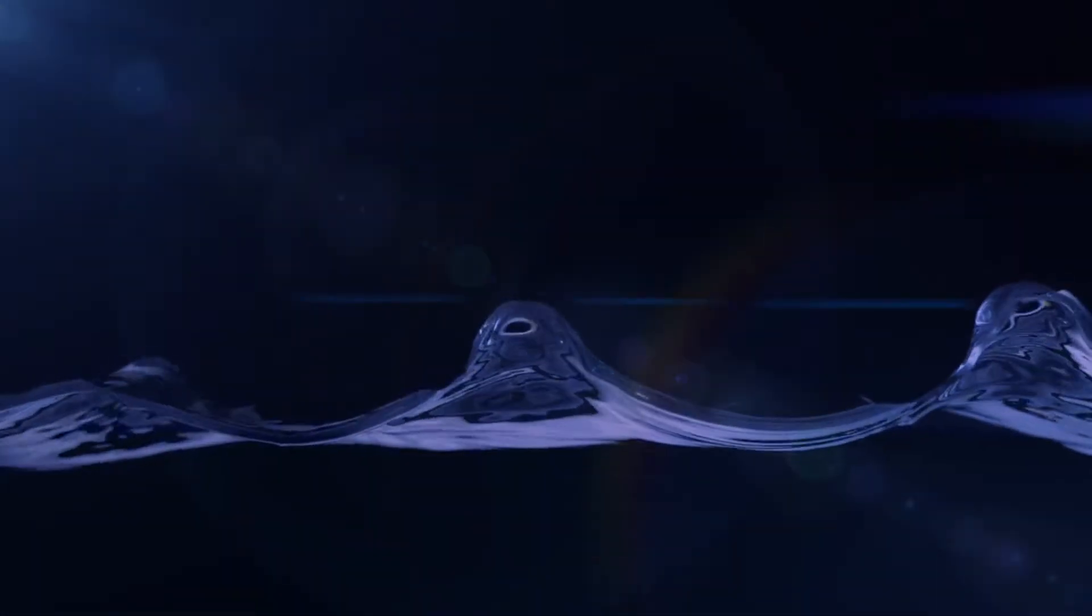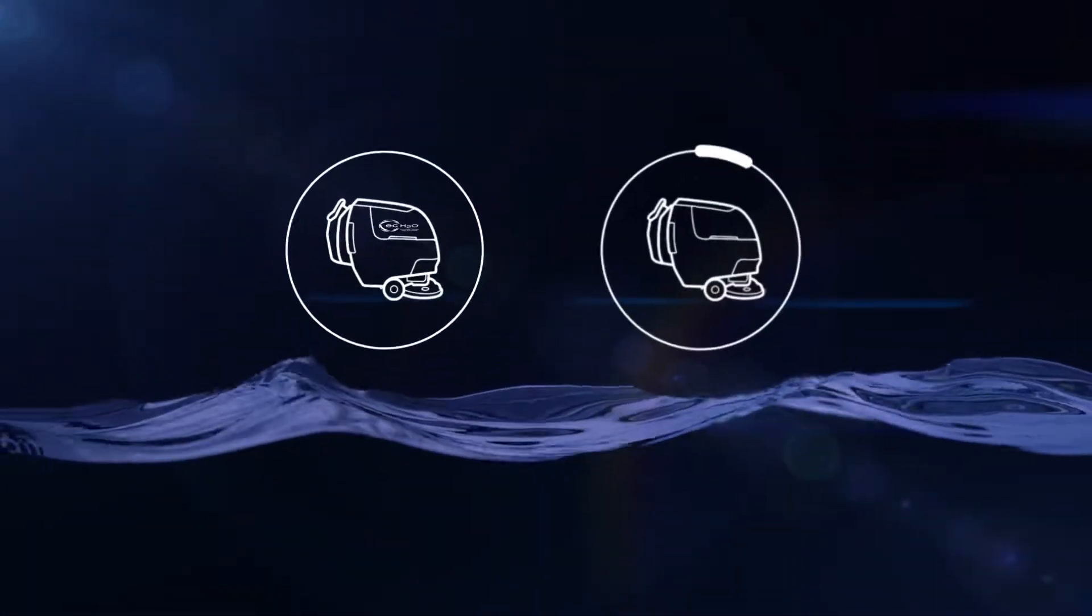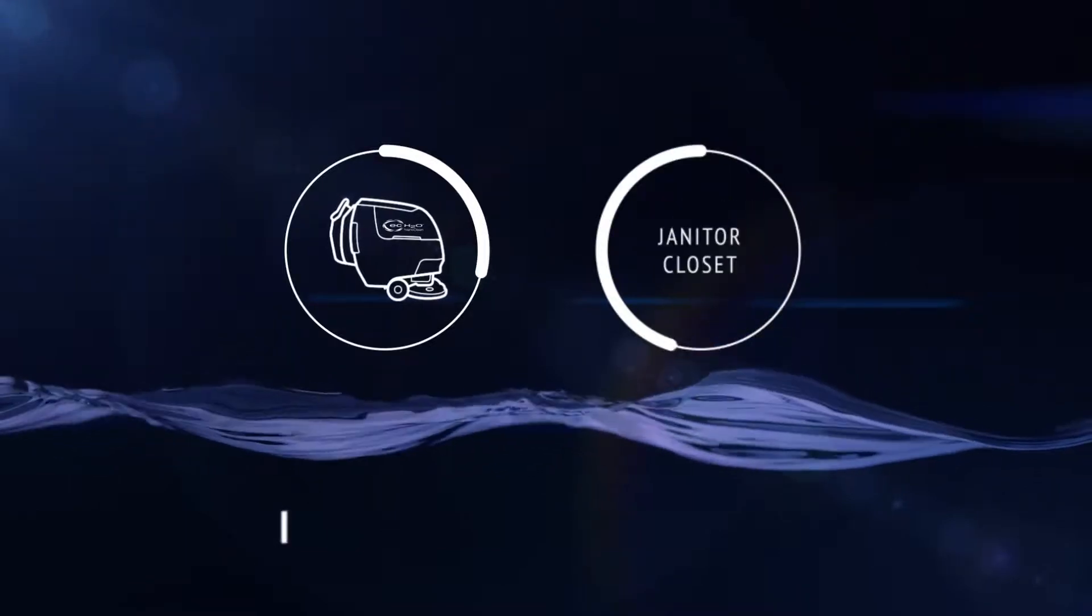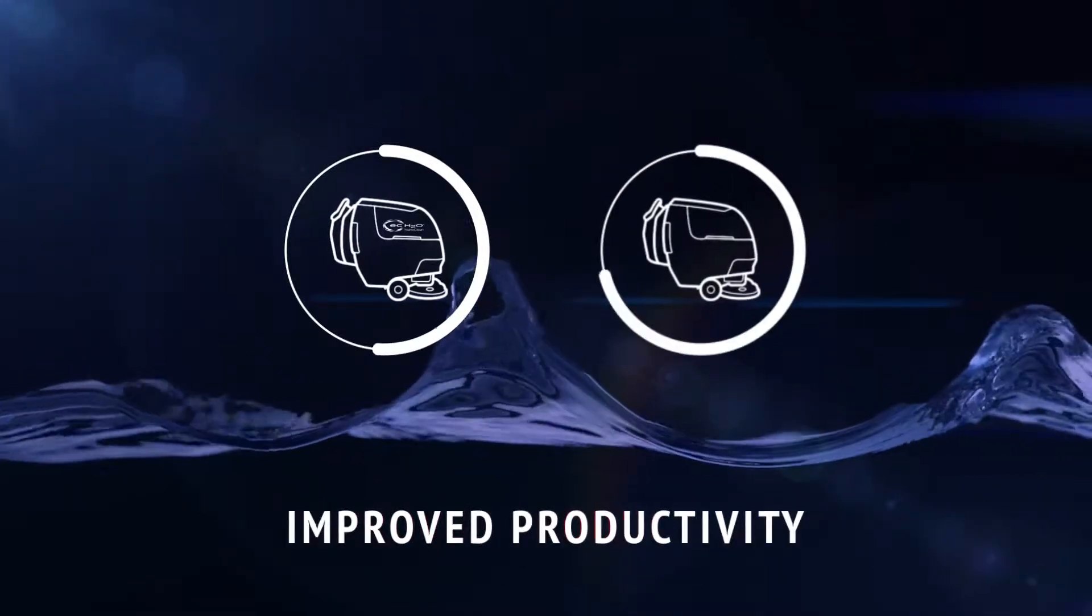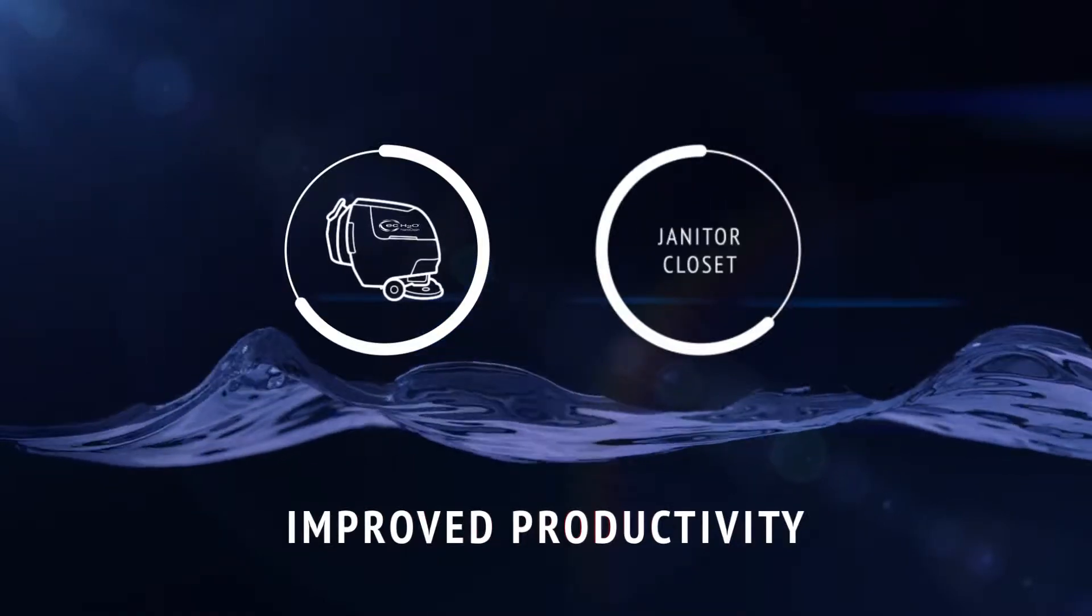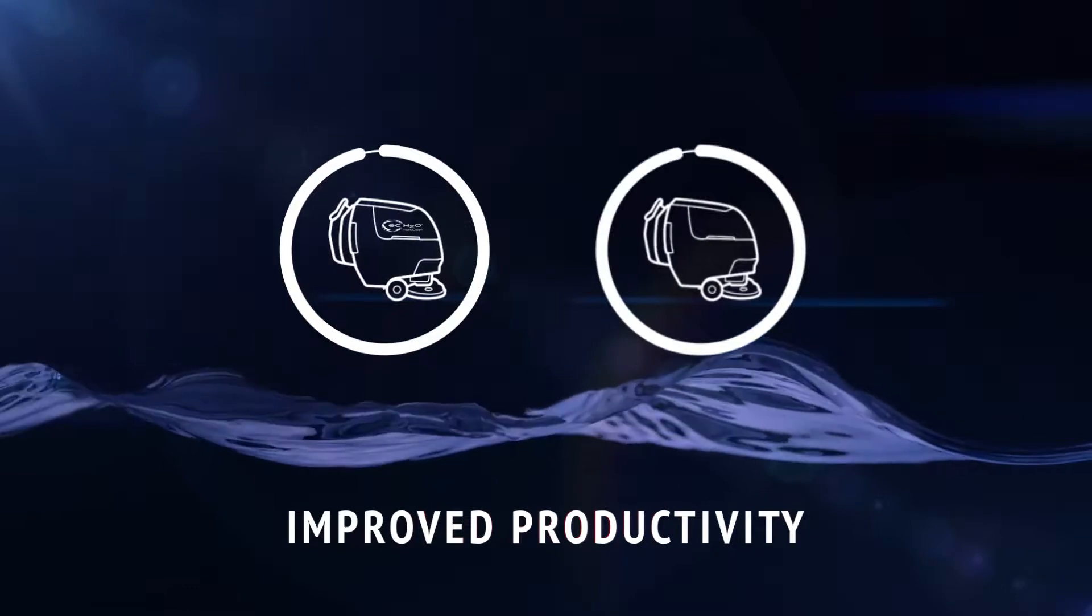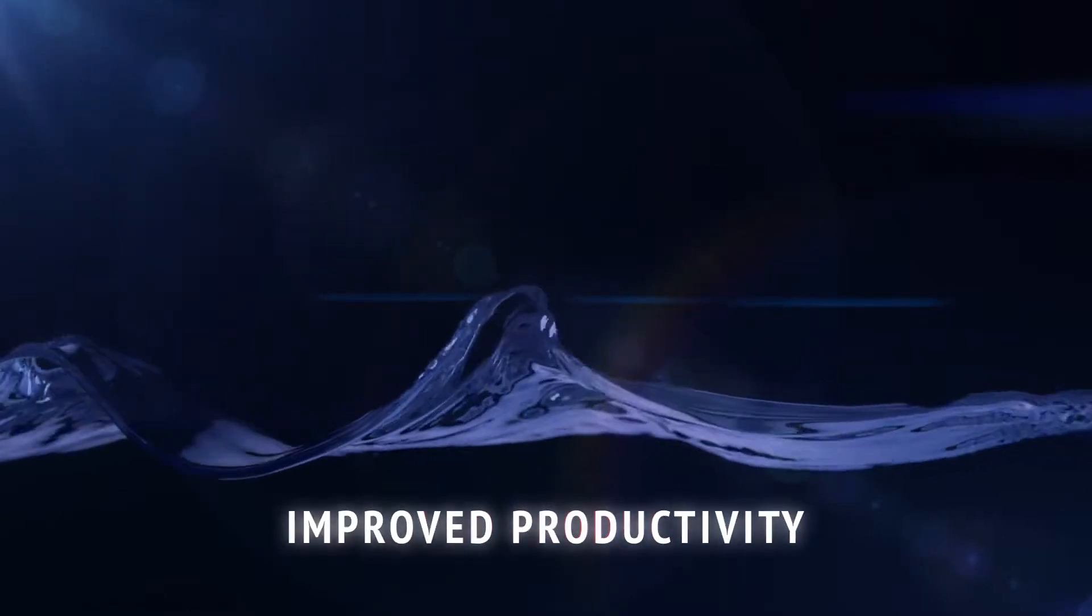EC Water NanoClean equipped floor scrubbers can significantly reduce water consumption for floor cleaning, which not only means using less water, but also means being able to clean up to three times longer before a trip to the custodial closet to dump and refill the machine, therefore providing significant improvements in productivity.